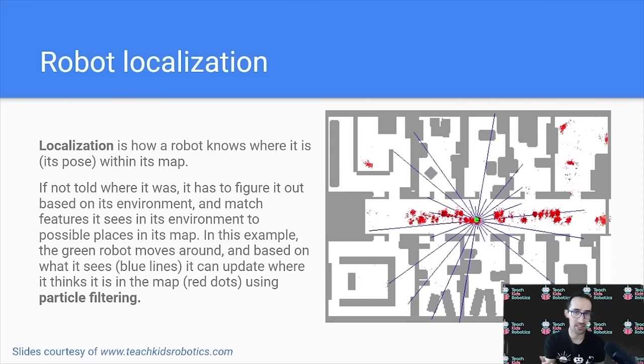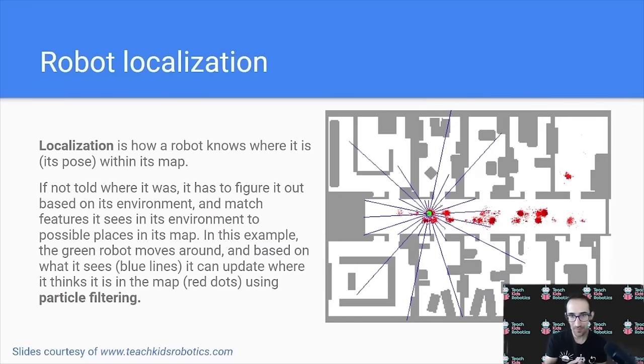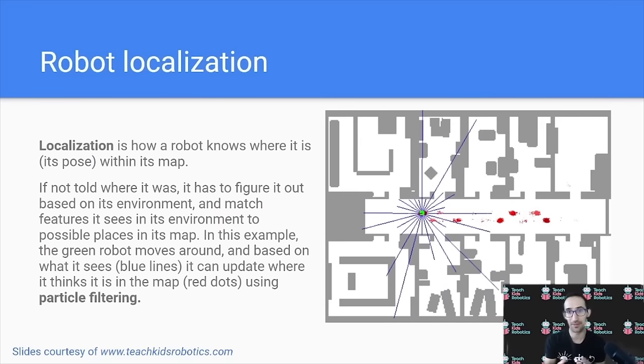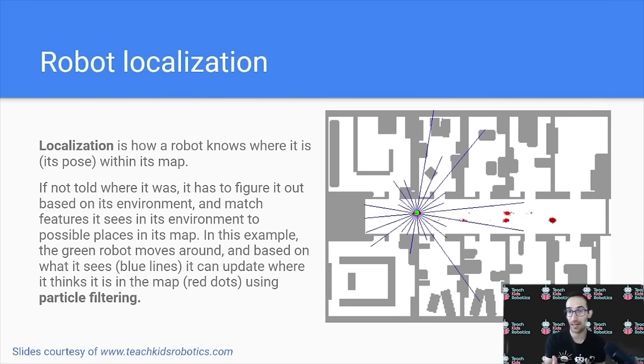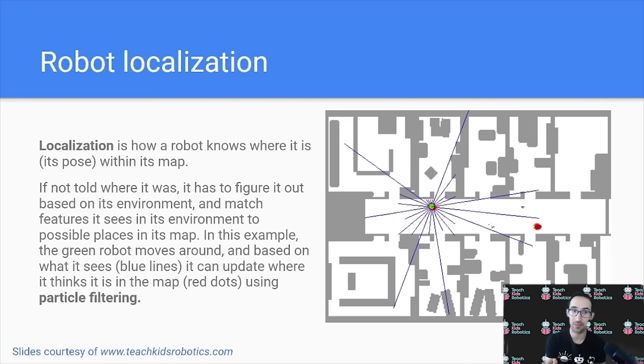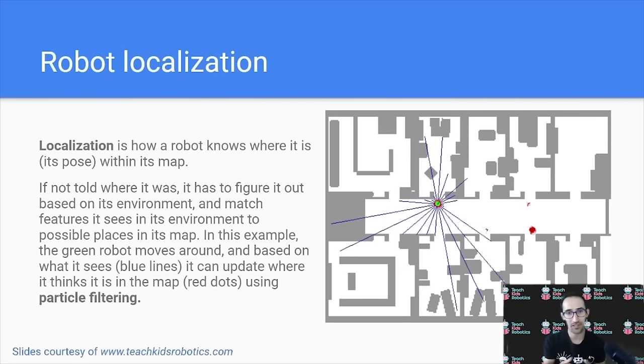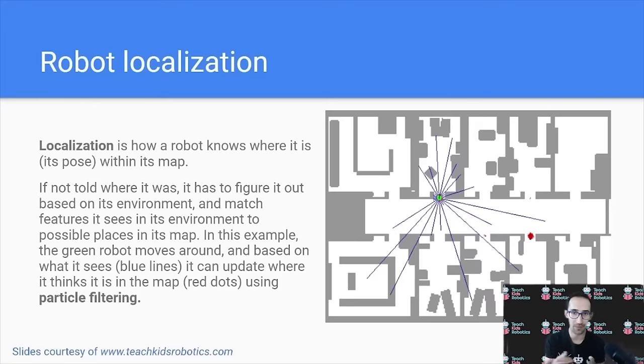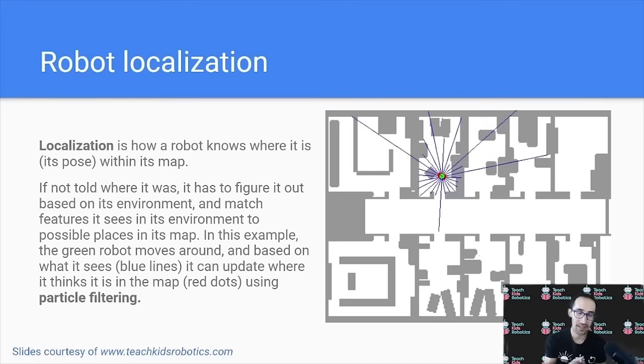Because if there are walls nearby, you know you can't be in an open hallway. Now this method by which the robot can look at its environment and determine what it sees to rule out where it possibly could be is a high level description of a technique known as particle filtering, which is kind of visualized on the right with the red particles reflecting probabilities of where the robot could be. And as the robot moves around, it can hone in and improve the probabilities to really get a high degree of accuracy to where it is within its map.